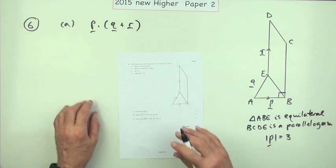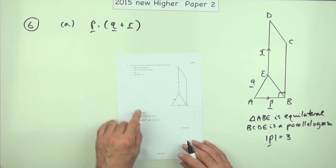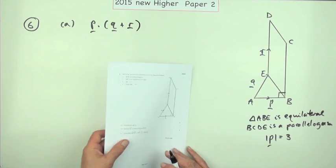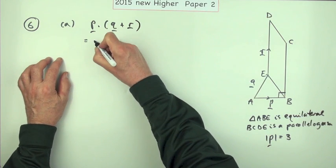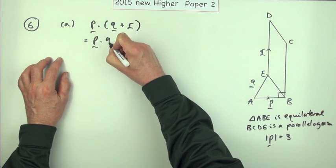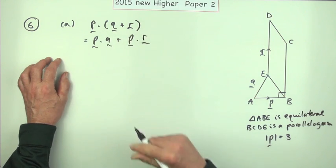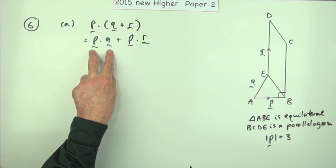So it shouldn't be that bad. The first part here for three marks, evaluate this. Well the first part would be multiply it out, it'll be p dot q plus p dot r.